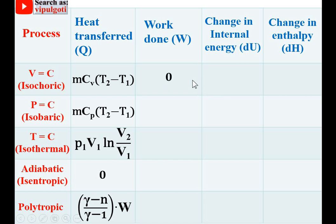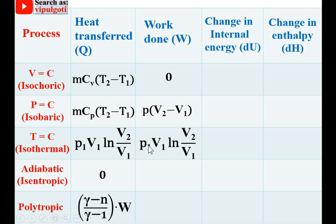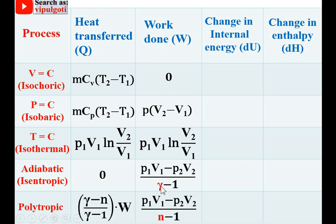For work done, starting from the isochoric process: work done is PdV, but since volume is constant, change in volume is 0, so work done is 0. For the isobaric process, work done is PdV. For the isothermal process, heat is completely converted into work done. For the adiabatic process, work done is (P1V1 − P2V2)/(γ − 1). For the polytropic process, the adiabatic index γ is replaced by the polytropic index n, and that work done multiplied by (γ − n)/(γ − 1) gives heat transfer.